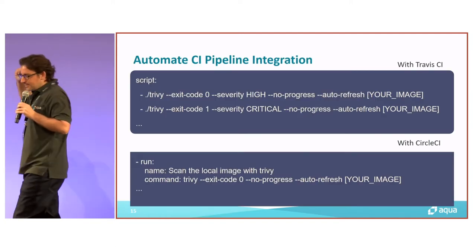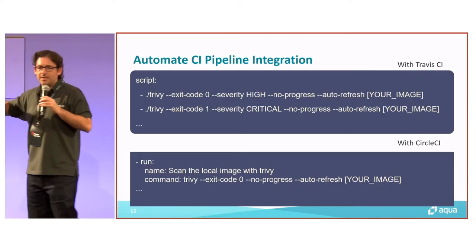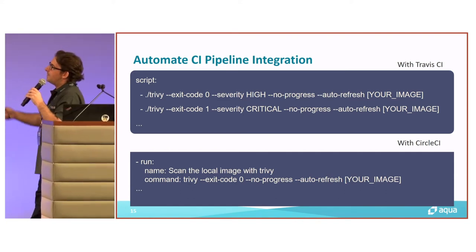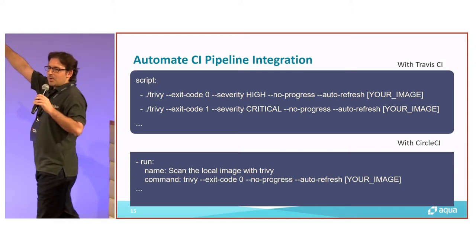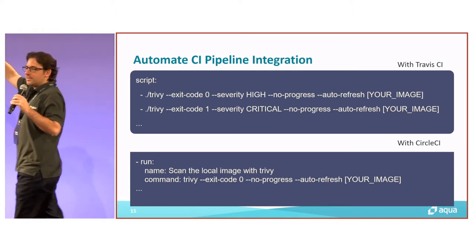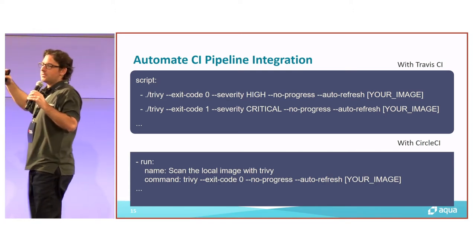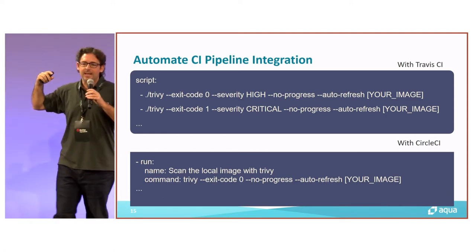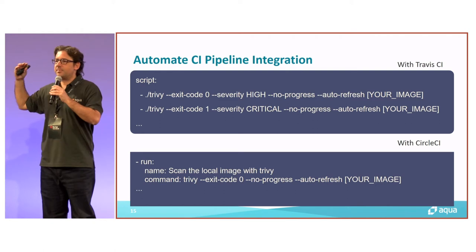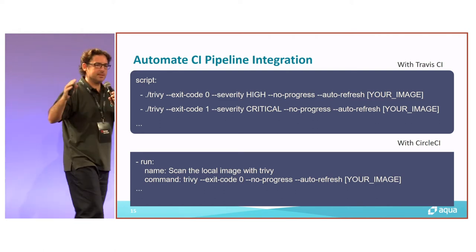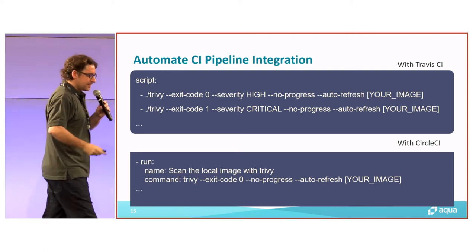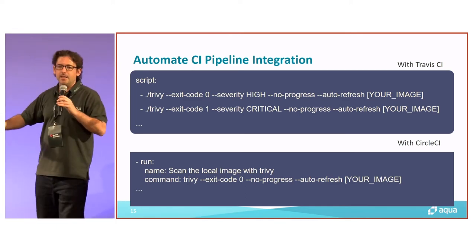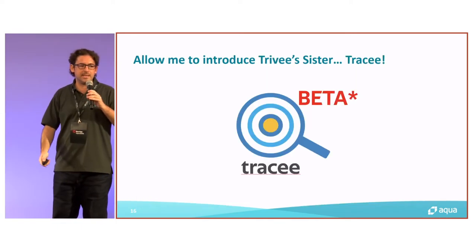Very quickly, if you wanted to use Trivy in your pipeline, here's an example — and you can use it in any tool: Jenkins, Travis, whatever you happen to be using. Give it an exit code of zero if you have high severity vulnerabilities, because that is aligned with your risk appetite. Give it an exit code of one if you have a critical vulnerability, and prevent your image from being pushed into your production registry. You can use it on the developer's workstations, put it in your pipeline, and control the promotion of images from staging to production.